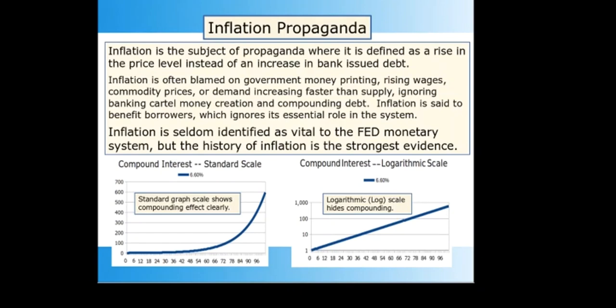Inflation is treated as a rise in the price level instead of an increase in bank-issued debt. Rises in asset prices are usually not described as inflation. Economics propaganda places the cause of inflation as an increase in government printing of money, which denies the primary means of money creation — banking cartel credit. Economics propaganda also defines cost-push and demand-pull inflation, in which wage increases are the main cause. The public is constantly directed away from compounding bank debt as the cause of inflation. Bank money creation is the way 97% of the money supply is created, so it is ridiculous to ignore the Federal Reserve system as the cause of monetary inflation.